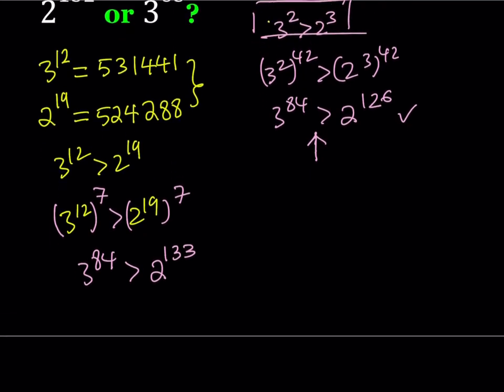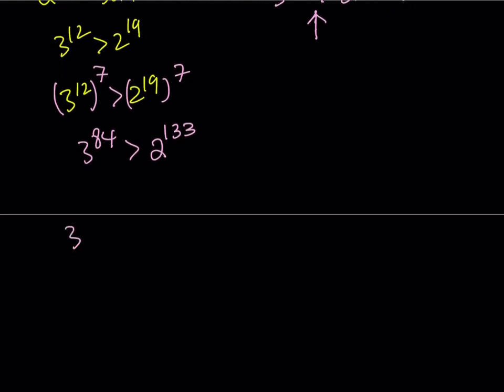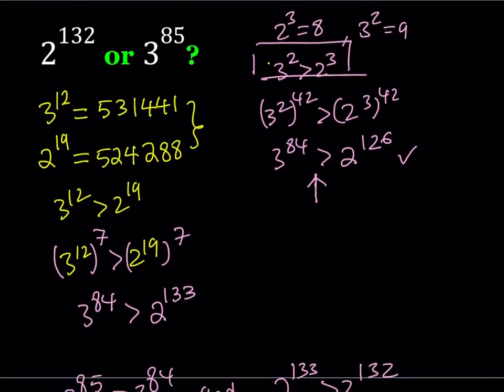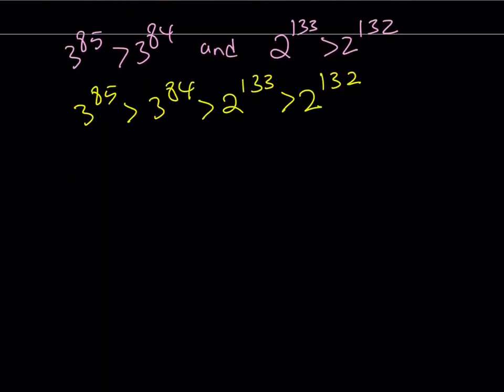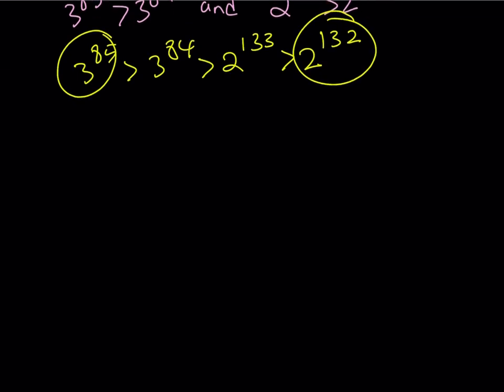Now this is what I have. And remember, our original problem is asking us to compare these two numbers. And we're pretty close. Because we know that 3 to the power 85 is greater than 3 to the power 84. And 2 to the power 133 is greater than 2 to the power 132. If you put it all together, we get the following. This means 3 to the power 85 is greater than 3 to the power 84, which is greater than 2 to the power 133, which is greater than 2 to the power 132. And our initial numbers were the 2 to the power 132 and 3 to the power 85. Therefore, these are our original numbers. We can safely say that as a conclusion, 3 to the power 85 is greater than this number.